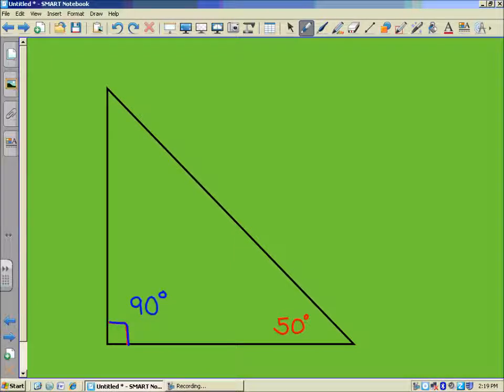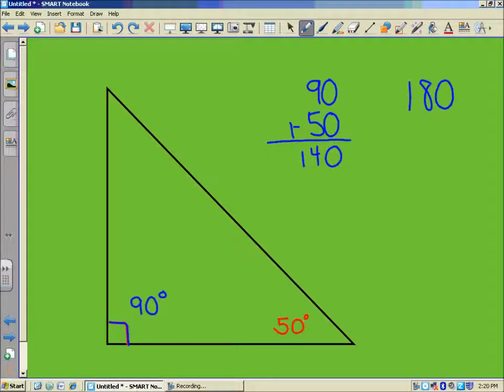So once again, I'm going to add the two that we know. 90 plus 50, 0 plus 0 is 0, 9 plus 5, 14. It's 140 degrees together, those two. And now we take those from 180. What's left would be 40 degrees. So you've quickly found the measure of that missing angle. 40 degrees.